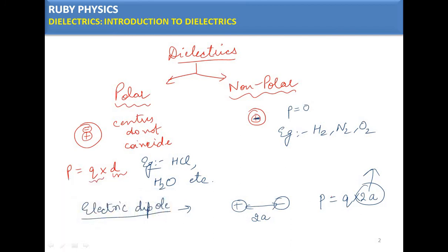This quantity P is the dipole moment. It is a vector quantity, and its direction is from the negative charge to the positive charge.